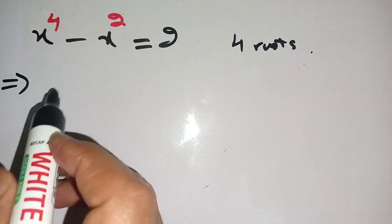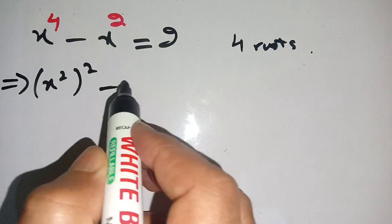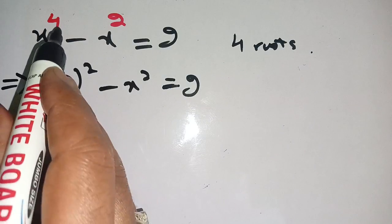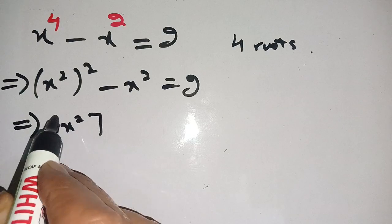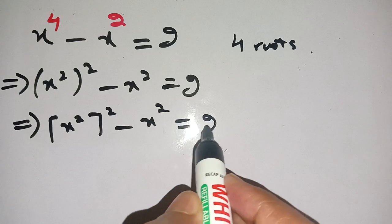Let us solve this. We can write this as x power 4, which can be written as x power 2 whole square, minus x square is equal to 2. We can write this as x power 2 whole square minus x power 2 is equal to 2.